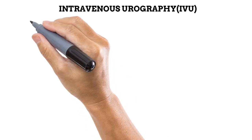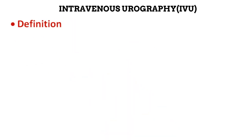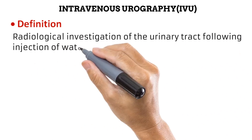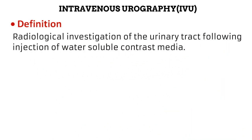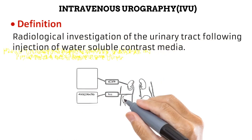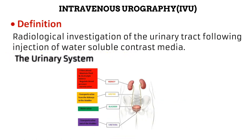With that being said, intravenous urography, or IVU for short, is the radiological investigation of the urinary tract following the injection of water-soluble contrast media. The contrast media is usually injected into a vein in the arm — this is why it is called intravenous.